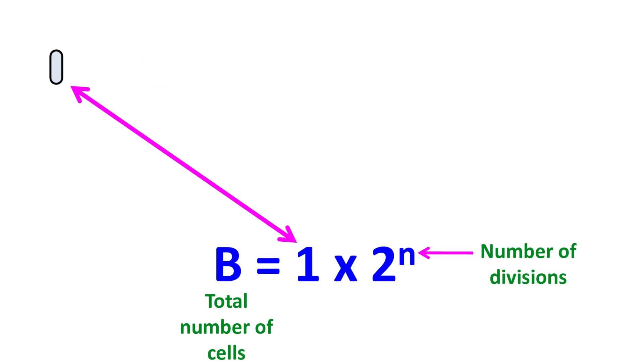But if there were two cells initially, then we have to multiply this equation by two. If there were three cells initially, then we need to multiply the equation by three.